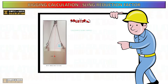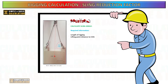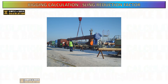In my previous video I covered the process of determining the reduction factor for a wire sling when lifting a load, whether it is a single vertical hitch or a multiple leg hitch. If you have not yet watched that video, I will include the hyperlink in the description.